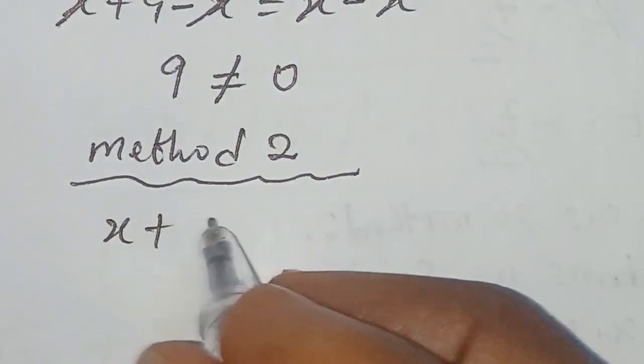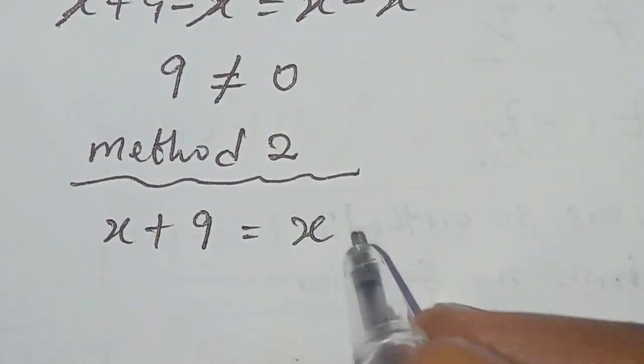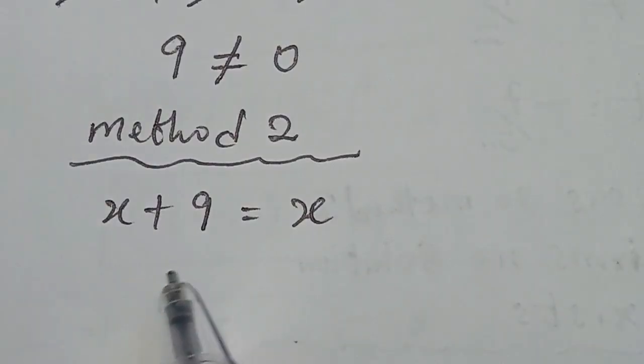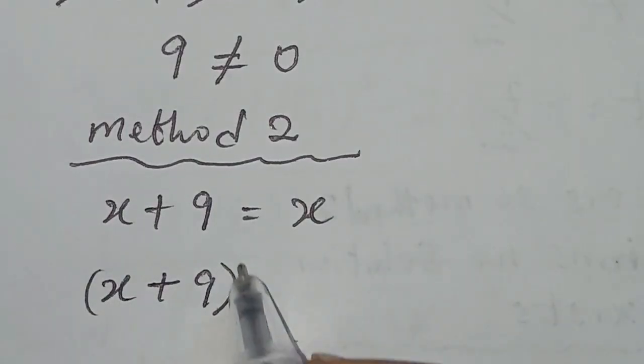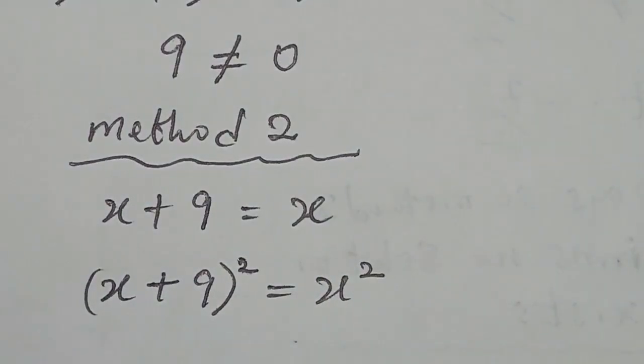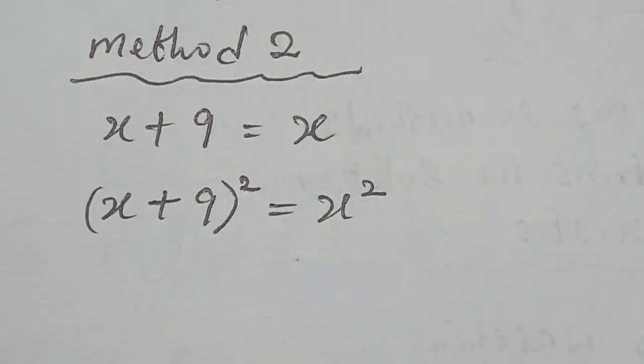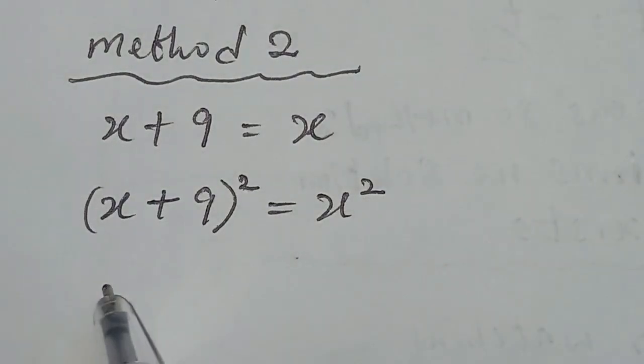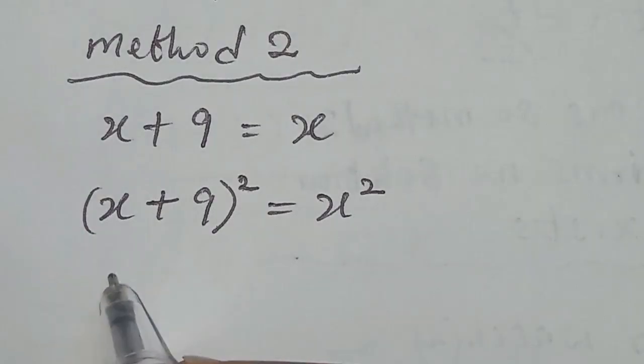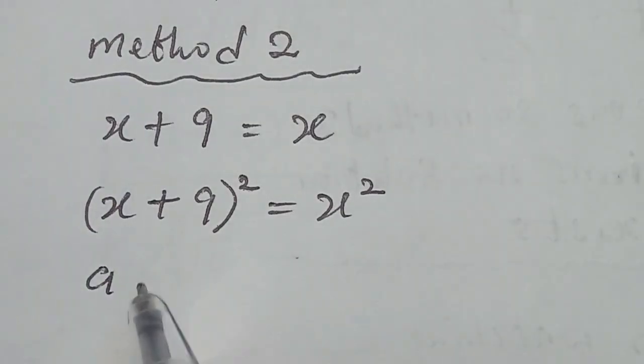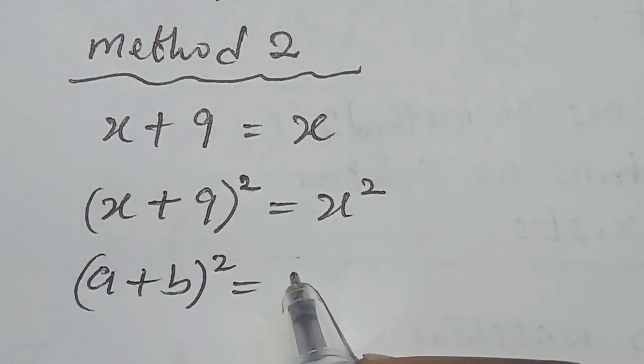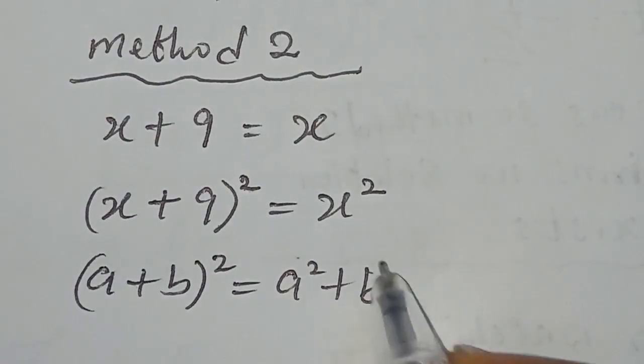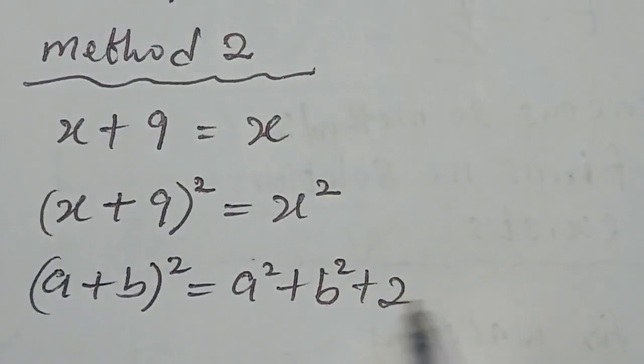We have x plus 9 equal to x. Now, we square both sides. From here, this left-hand side appears to be in the form of this identity: a plus b squared, which is expanded as a squared plus b squared plus 2ab.